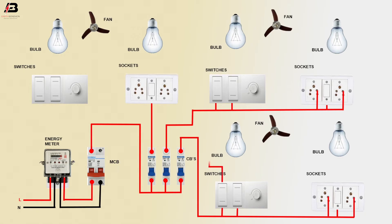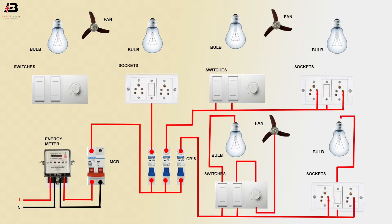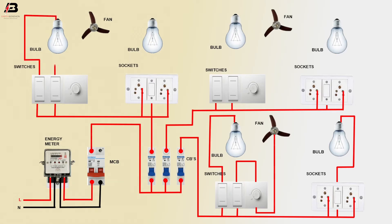Phase connection outgoing from switches to bulb. Phase connection outgoing from switches to regulator, then to fan phase connection. Phase connection outgoing from switches to bulb 2. Phase connection outgoing from sockets to switches. Phase connection outgoing from switches to bulb 1, phase connection outgoing from switches to regulator, also phase connection outgoing from regulator to fan, phase connection outgoing from switches to bulb.